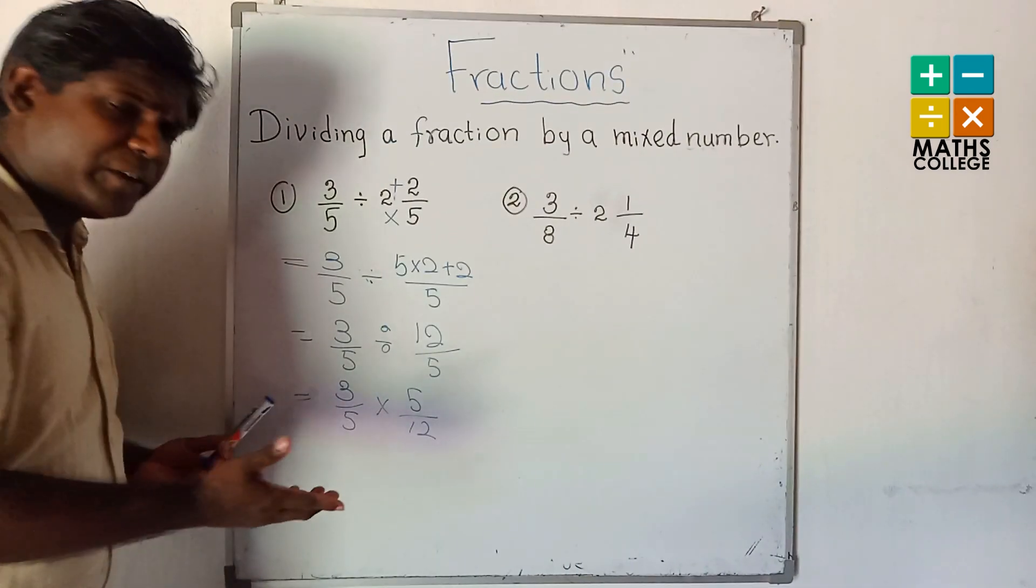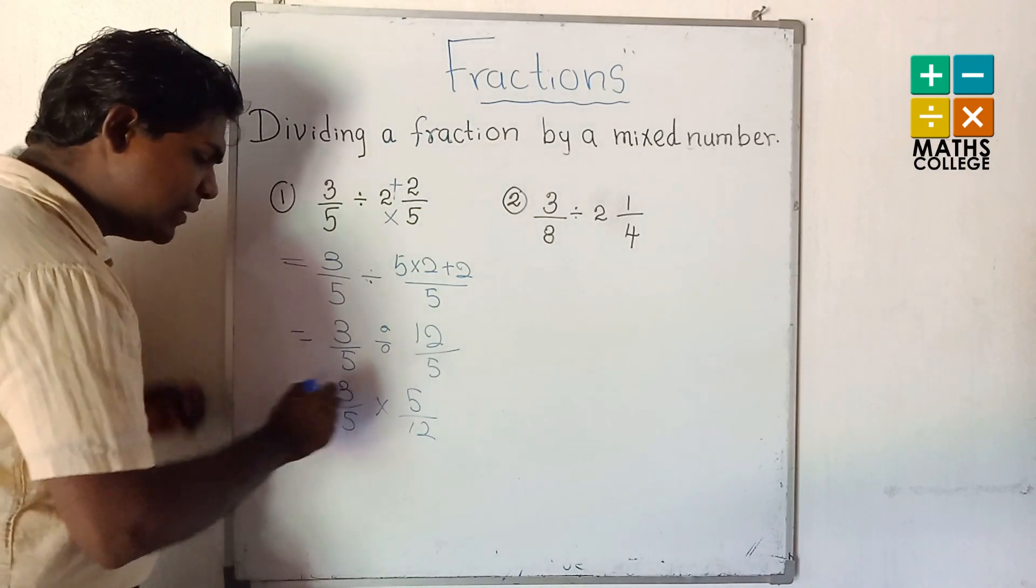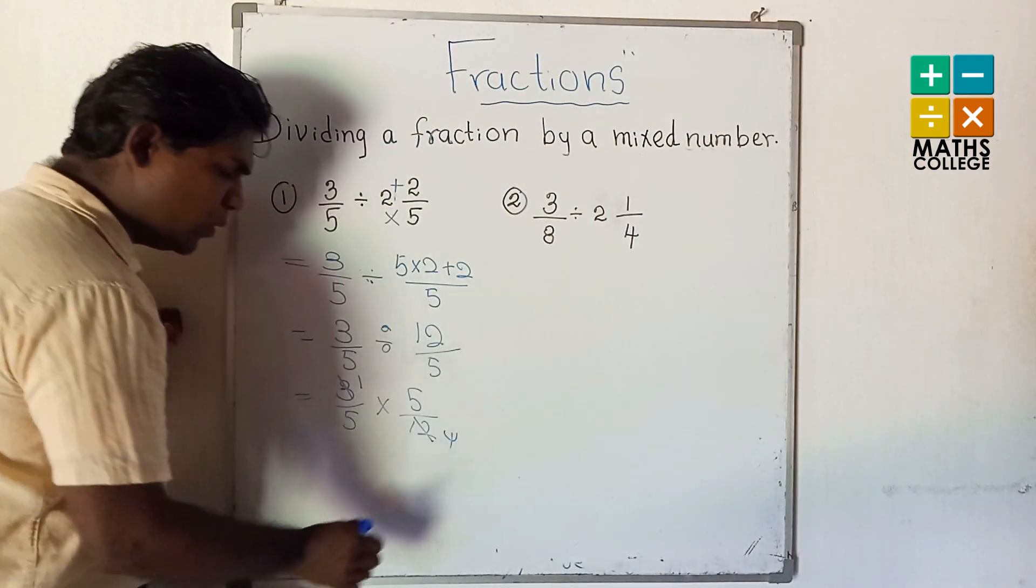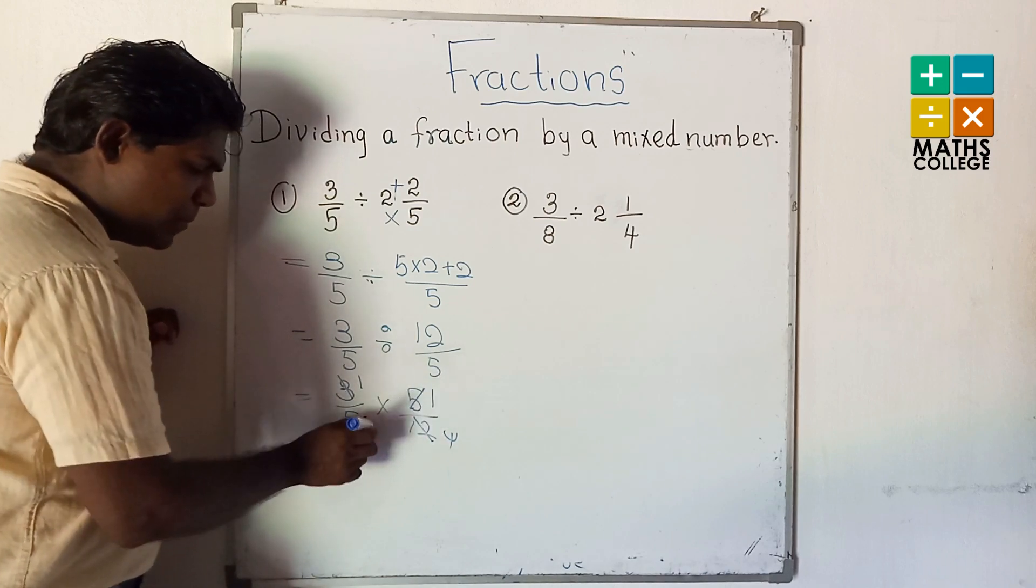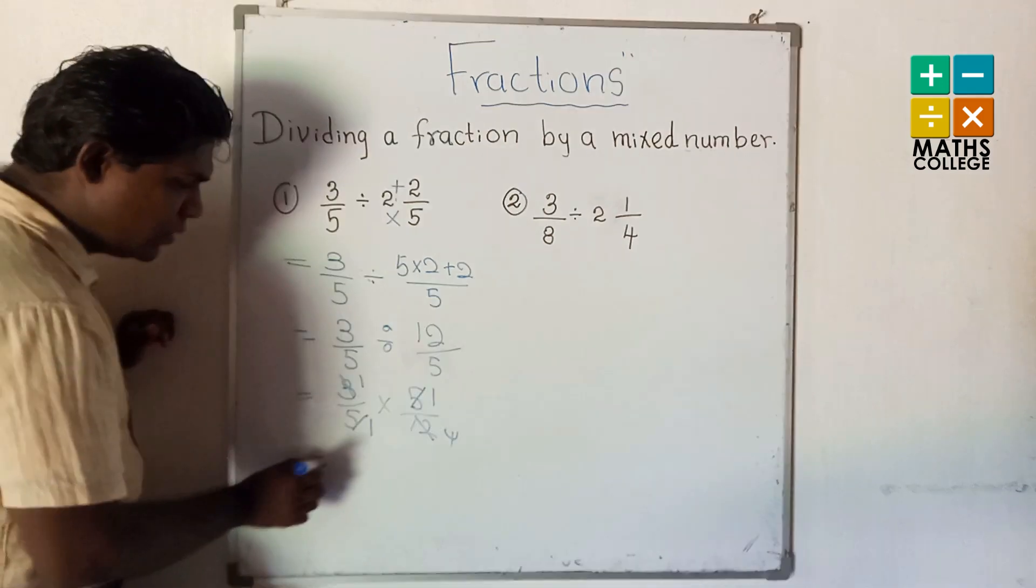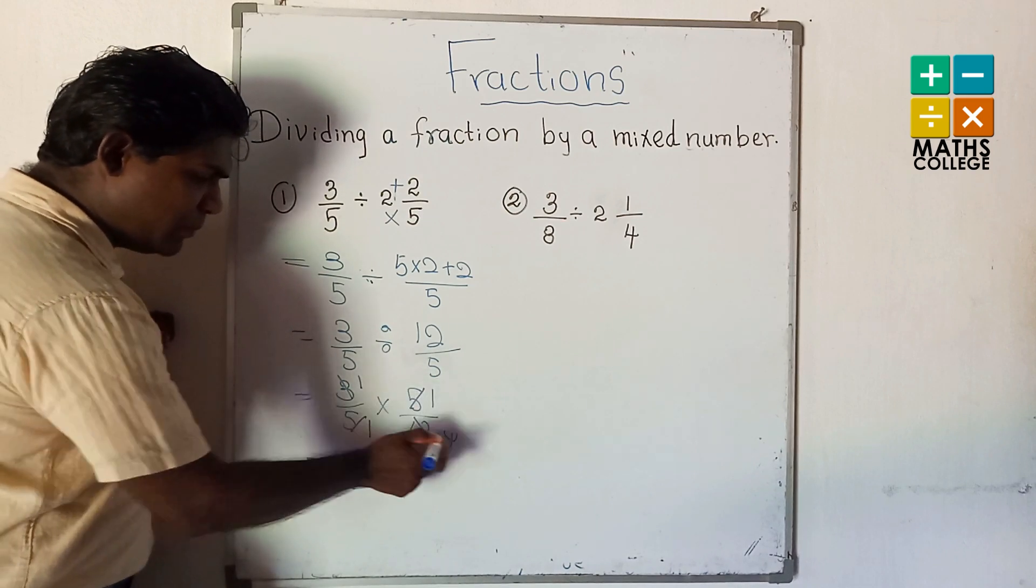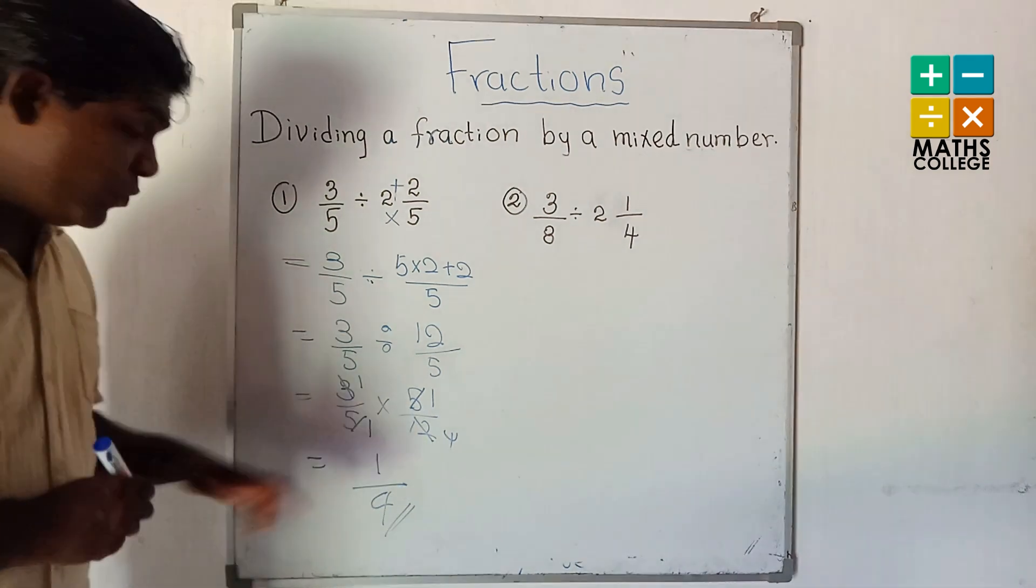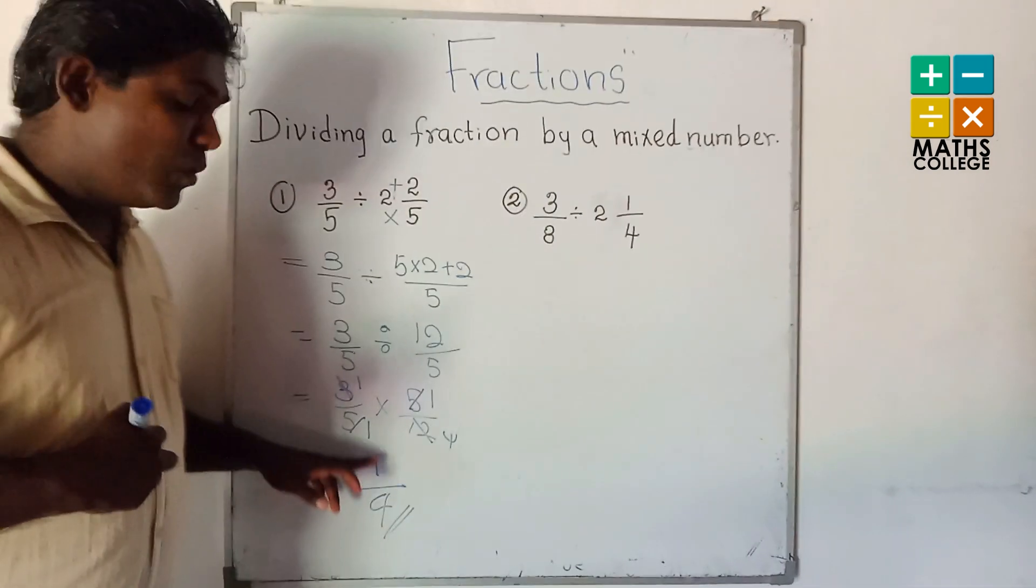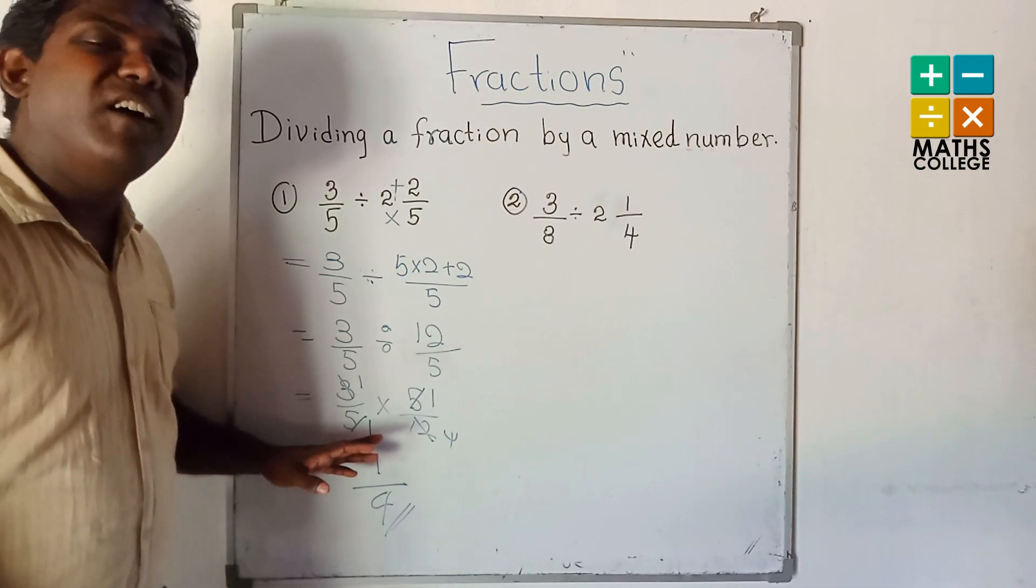Consider numerators and denominators. 3 and 5 have no common factors. 3 and 12 have common factors. By 3: 1 and 4. Then 5 and 5 cancel by 5: 1 and 1. Now 1 multiply 1 is 1, 1 multiply 4 is 4. What is the answer? 1 upon 4, or one quarter.